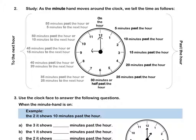If the minute hand is on the 1, it means that it is 5 minutes past 9. If it's on the 2, it means 10 minutes past 9. If it is on the 3, it means 15 minutes past 9.